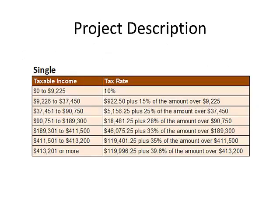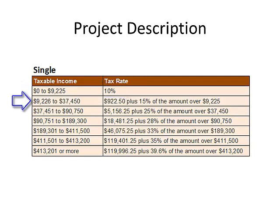Here's a tax table for someone who is single, showing the taxable income amounts that move a person from one tax bracket to another. Starting at 10%, from $0 to $9,225. Then from $9,226 to $37,470, you get taxed at 15% of anything over $9,225.